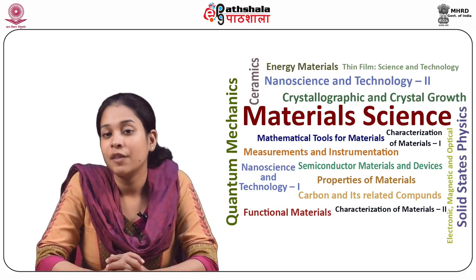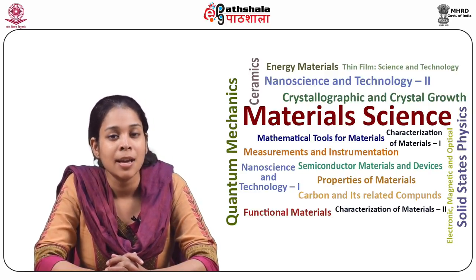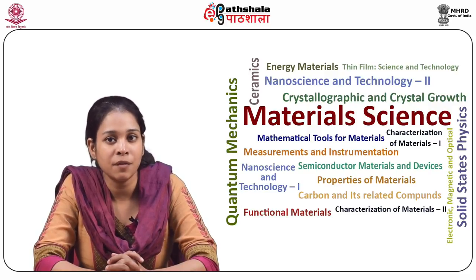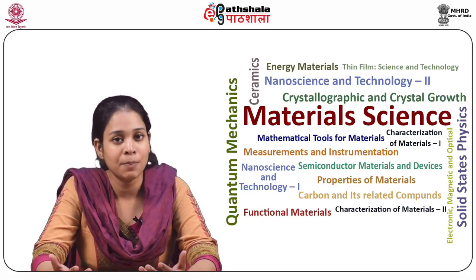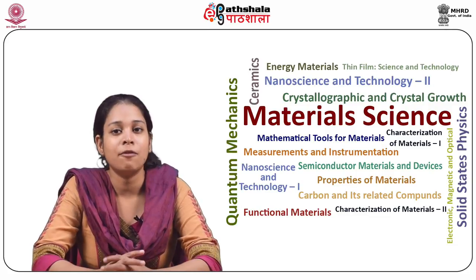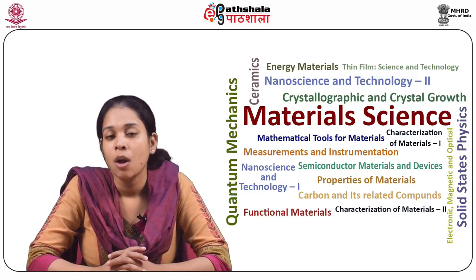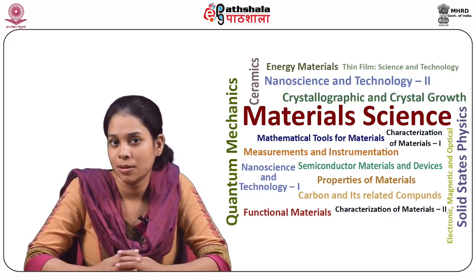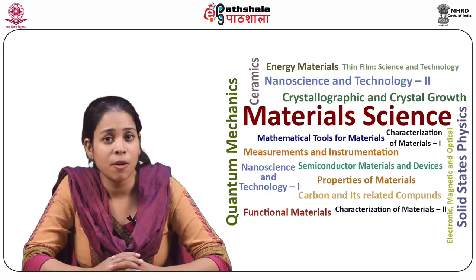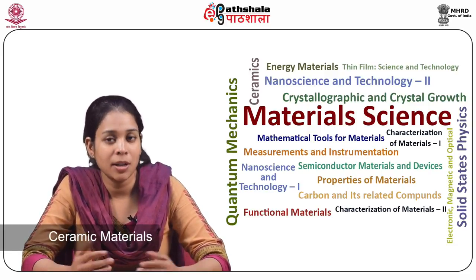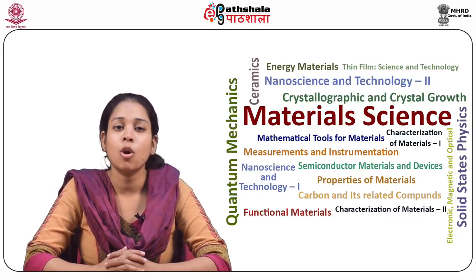In this module we will first briefly review the structure and bonding in materials in general, followed by a brief discussion on how atoms are packed in solids and what are the types of interstitials present in various structures. Then we would briefly look at the types of bonding with reference to the nature of materials. Together this information will form the basis of structure in ceramic material which are typically bonded with a mixed ionic and covalent bonding.